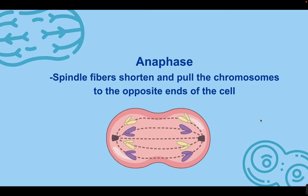After metaphase, we enter anaphase. The spindle fibers shorten, and by shortening they pull those chromosomes from the center to the opposite ends, or poles, of the cell. It looks like we're splitting the chromosome in half, but remember — in interphase we doubled that DNA, so each side is being pulled a full set. For anaphase, you can think of 'away' — we're pulling away from each other, splitting the chromosomes apart to opposite ends of the cell.